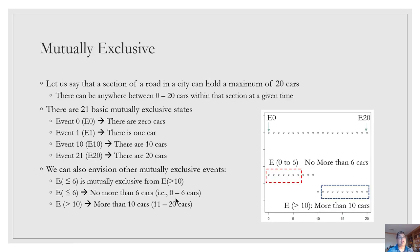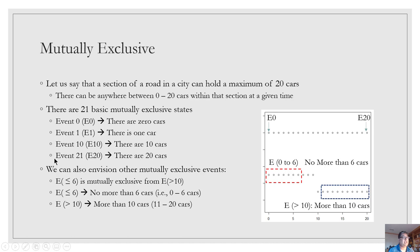Let's look at mutually exclusive and non-mutually exclusive random events. Say we have a section of road that can hold a maximum of 20 cars. At any given time, there would be anywhere from 0 to 20 cars, giving us 21 mutually exclusive states: E0 means 0 cars, E1 means 1 car, and so on up to E20 meaning 20 cars. These are the basic exclusive states, but we can also think of more complex states.